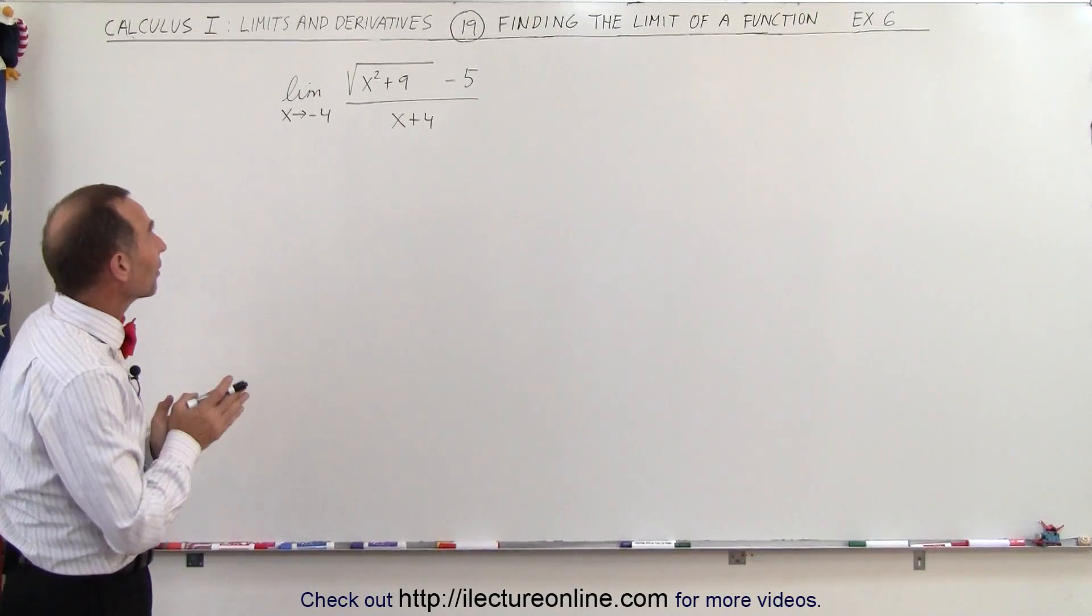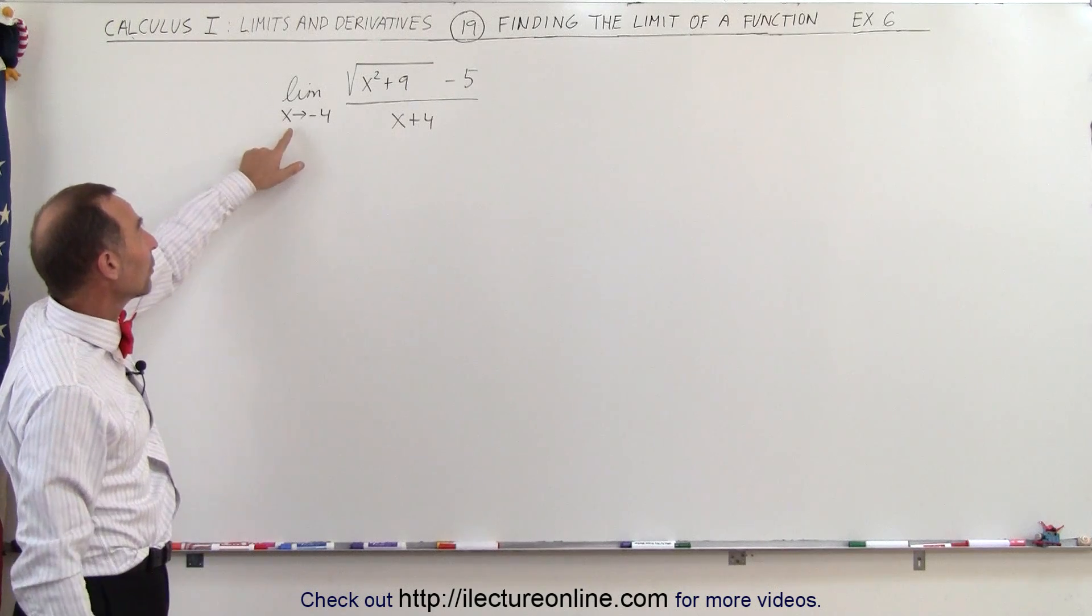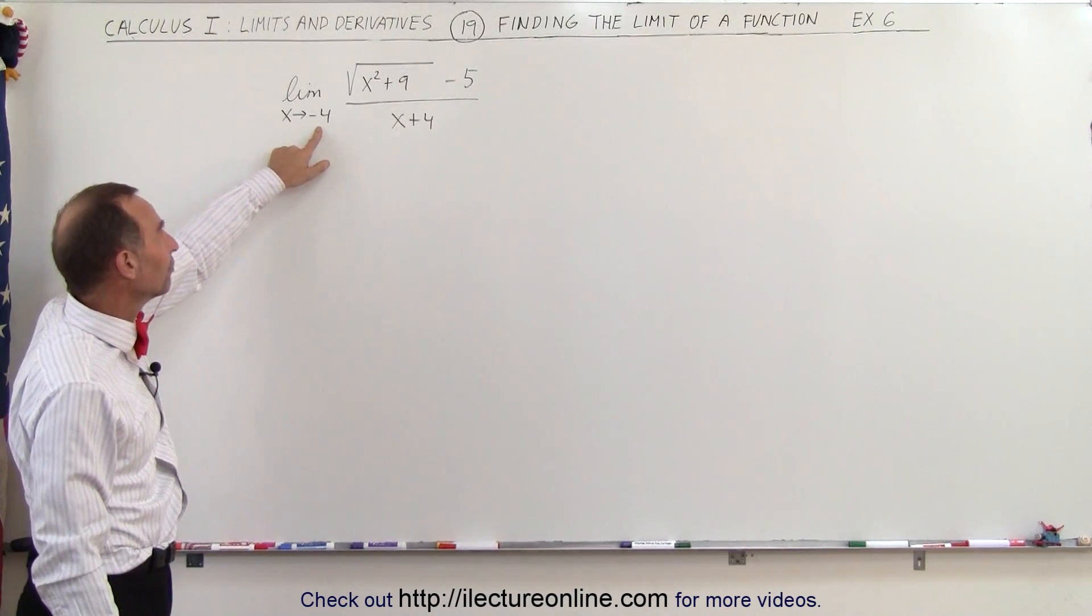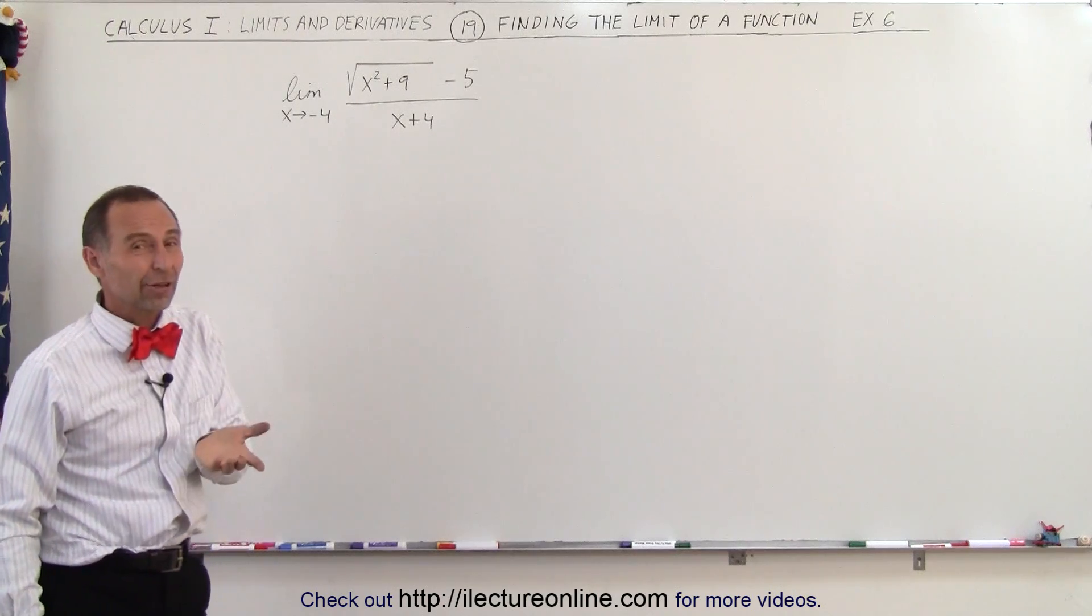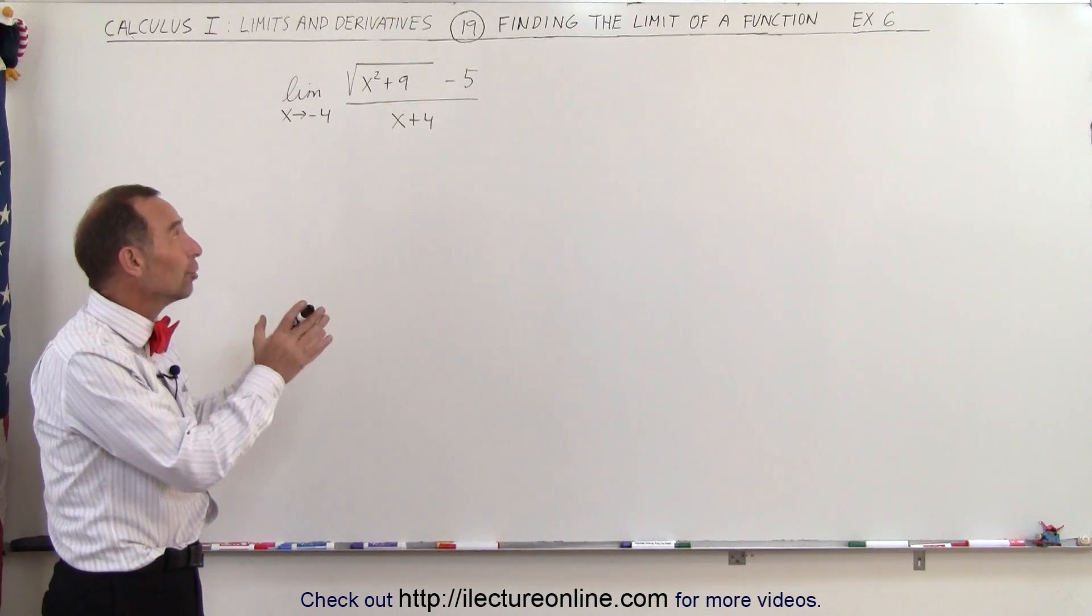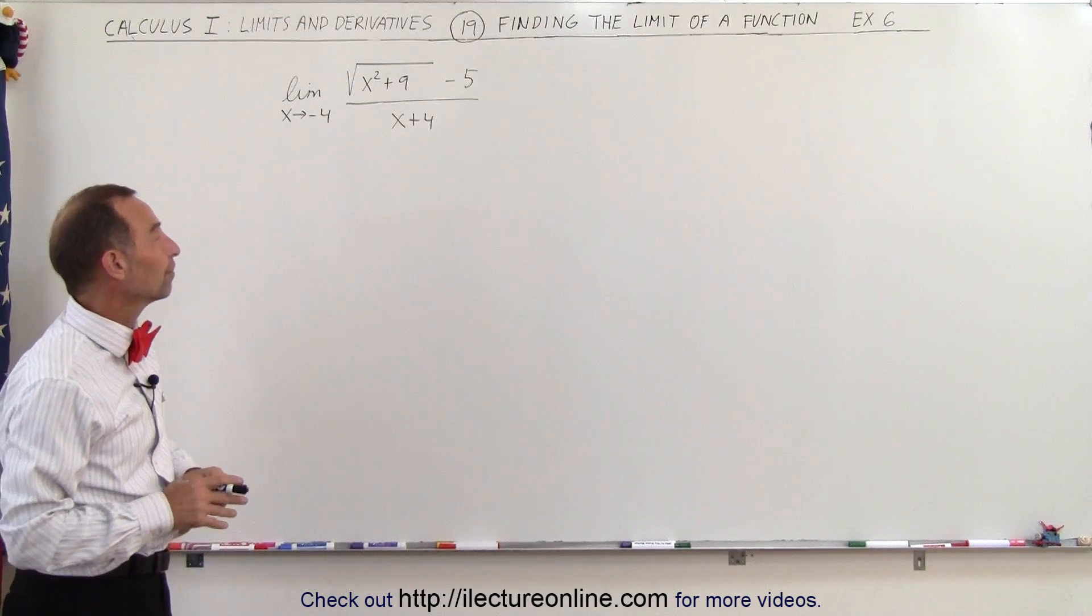Welcome to ElectronLine and here's another example of how to find the limit of a function. And again, by inspection, right away, when you allow x to approach negative 4 and you look at the denominator, negative 4 plus 4 gives you a zero denominator. Regardless of what you get in the numerator, that is a problem, so therefore we cannot find the limit in this fashion.